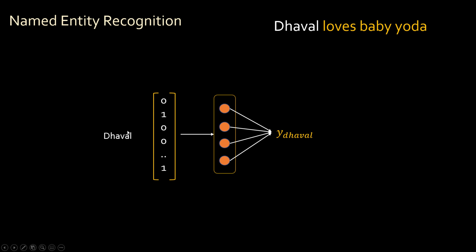Let's see how RNN works here. RNN stands for recurrent neural network. First, you have to convert each word into a vector — you can use one-hot encoding with a vocabulary or other vectorization methods. Then you have a layer of neurons — a hidden layer. You supply the word vector and get one output. Each neuron has an activation function like sigmoid. While processing the statement 'the world loves Baby Yoda,' you process it word by word — supply 'the world' and get the output.